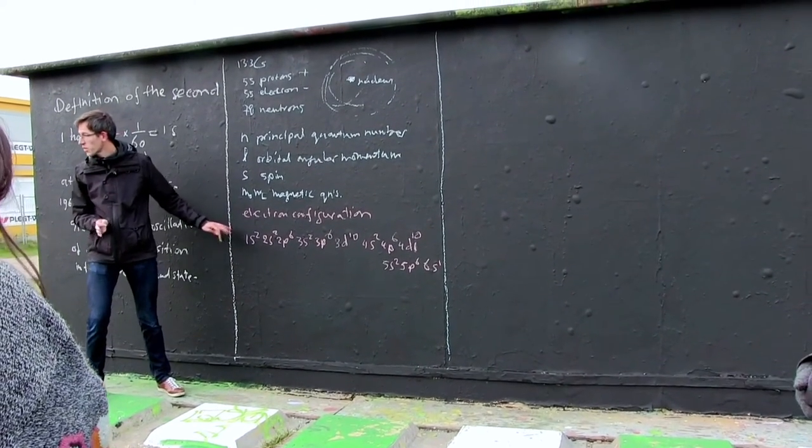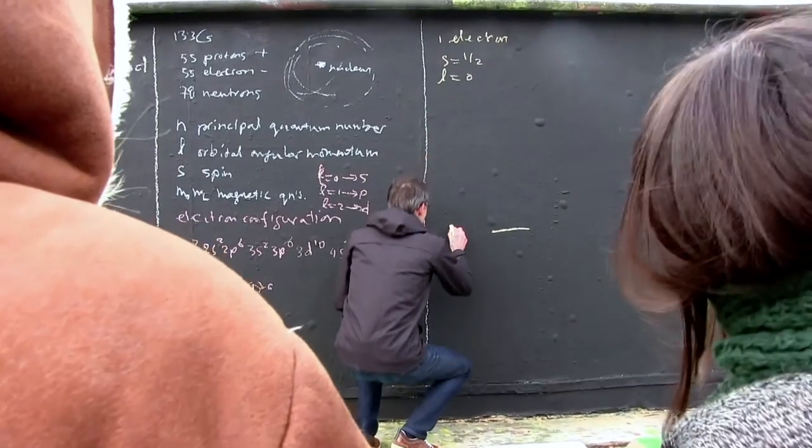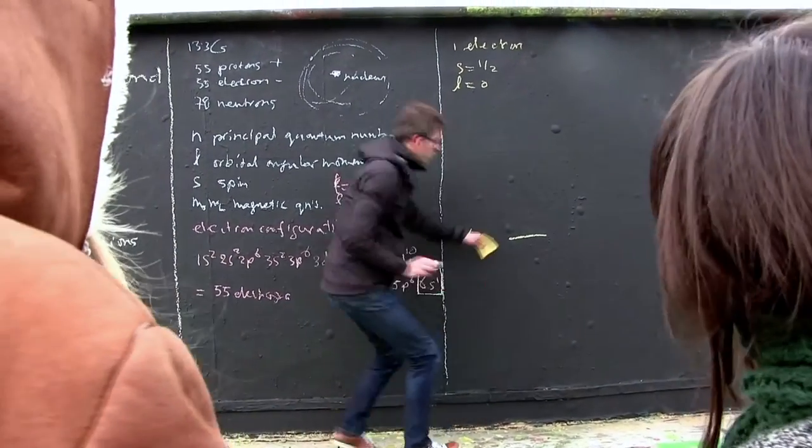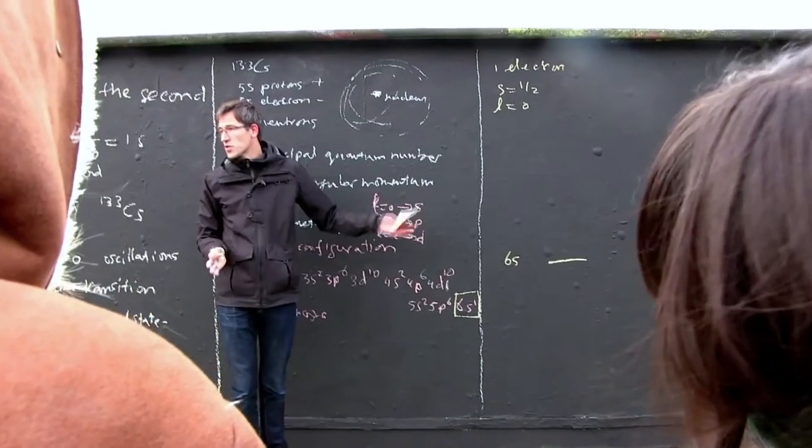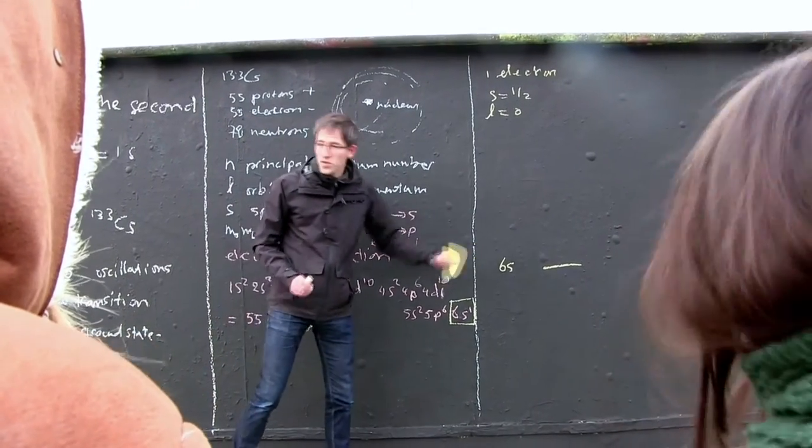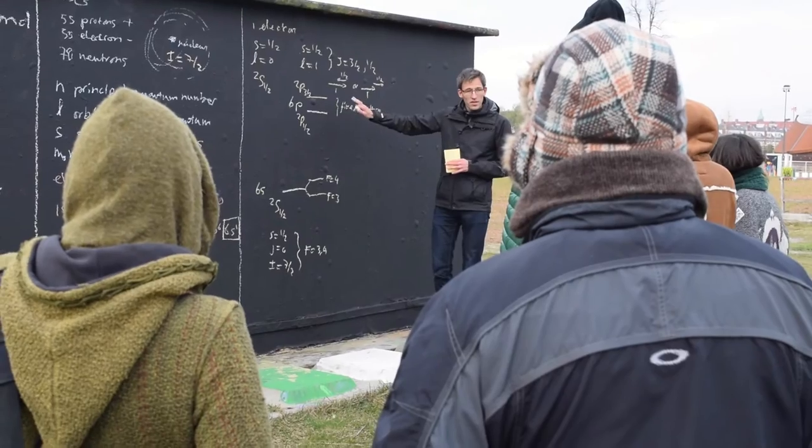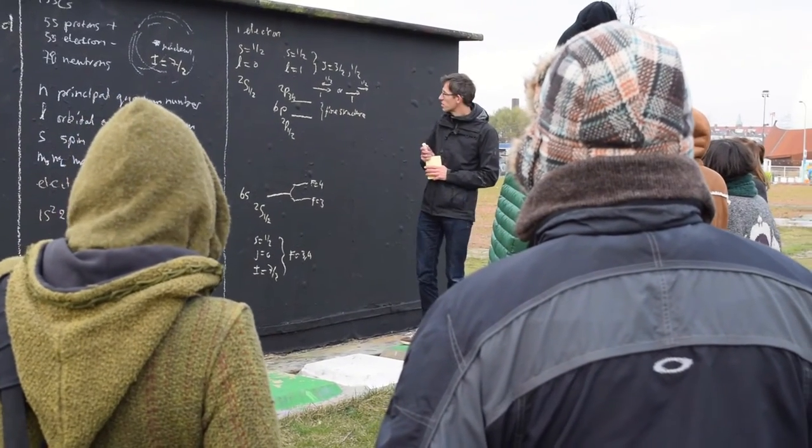That's the ground state of the atom, the 6s electron, just over there. These are the lowest energy levels of cesium. Actually, there's also a hyperfine structure here. The 2p1/2 splits in two levels because of the hyperfine interaction.